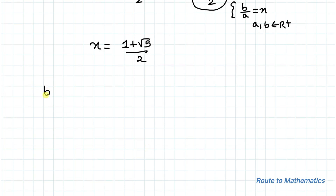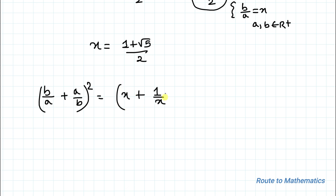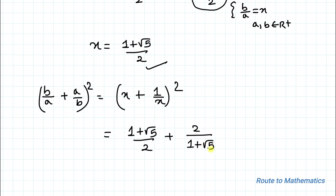Now, what are we asked to find? We are asked to find (b/a + a/b)². We have taken b/a as x, and a/b is just the reciprocal of b/a, so we can write 1/x in place of a/b. We have already found the value of x, so let's put it in: (1+√5)/2 + 2/(1+√5), whole squared.